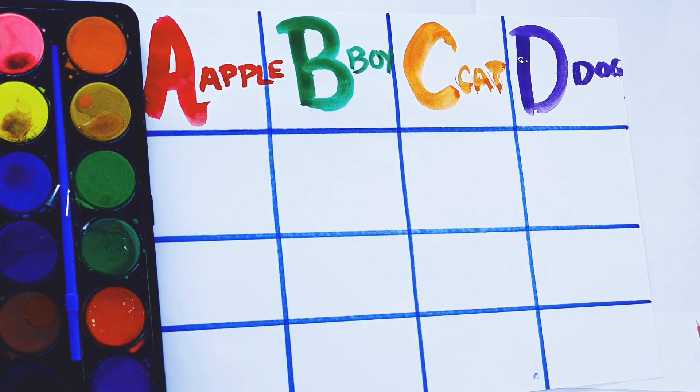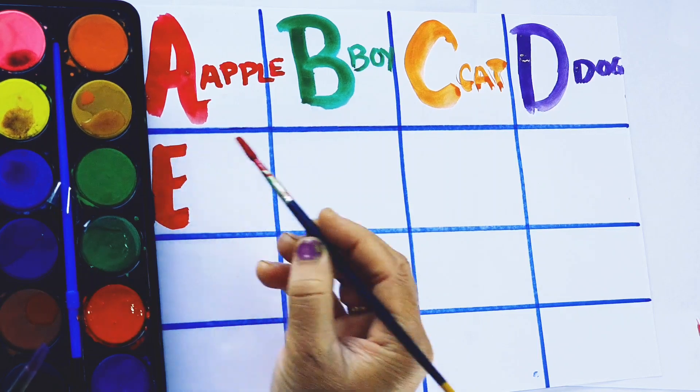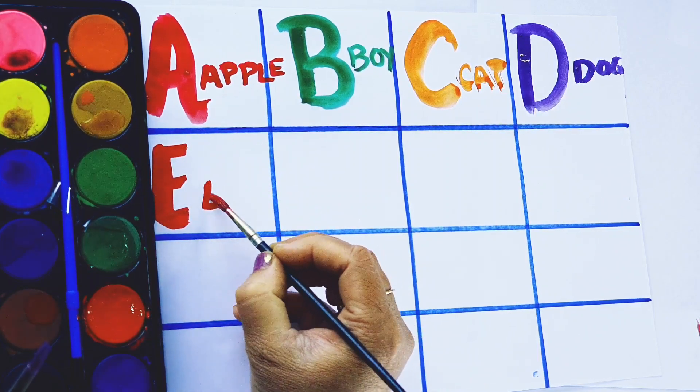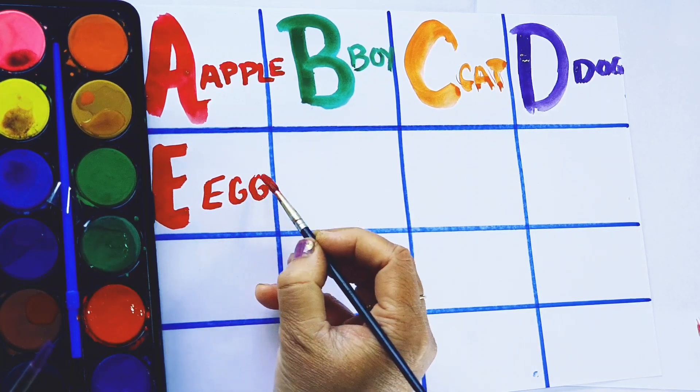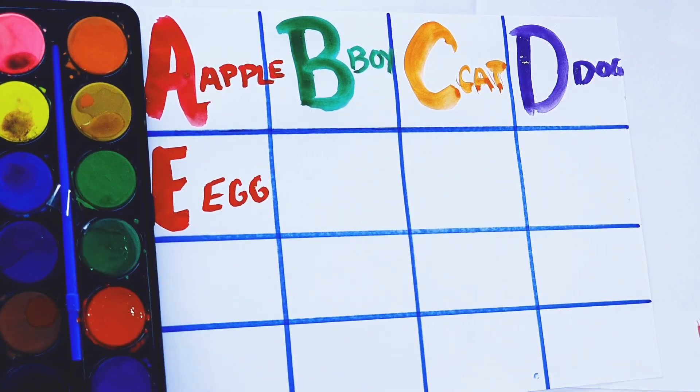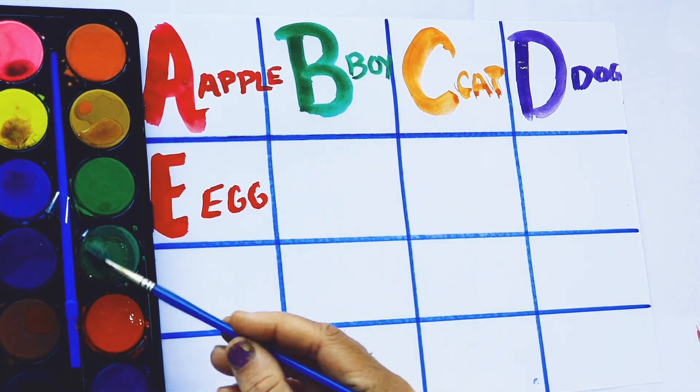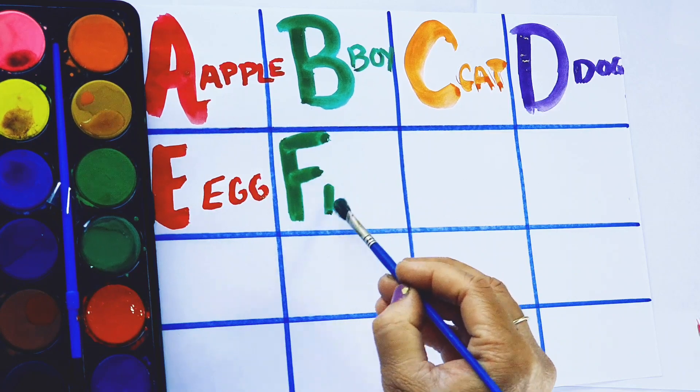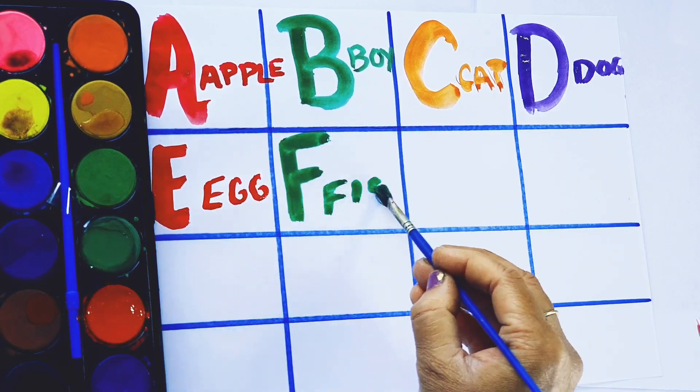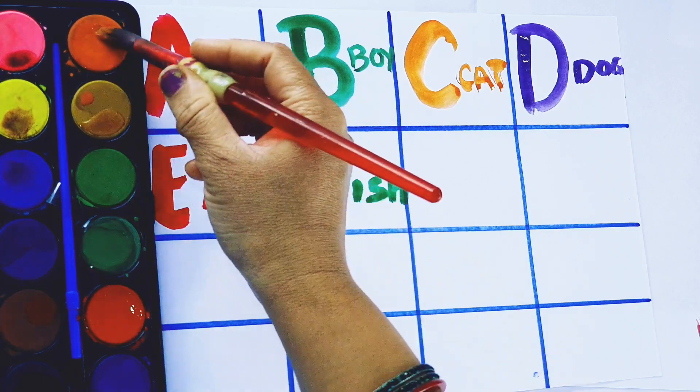Red color. E, red color, E for egg. Green color. F, F, F for fish. Orange color.